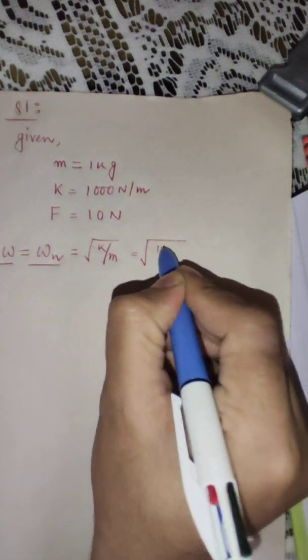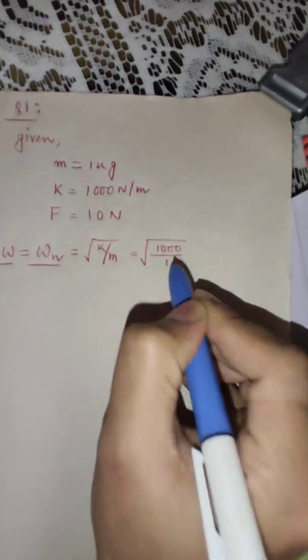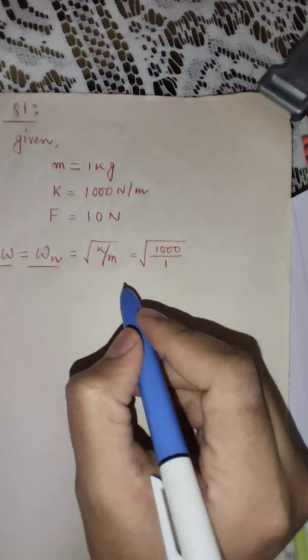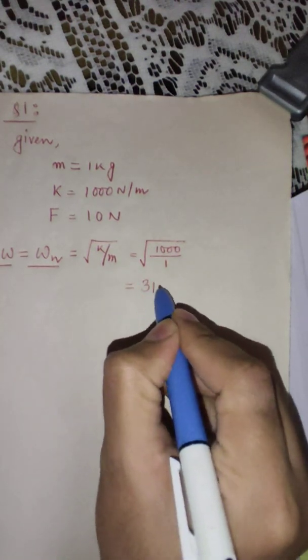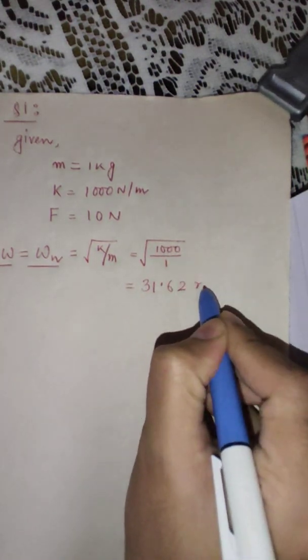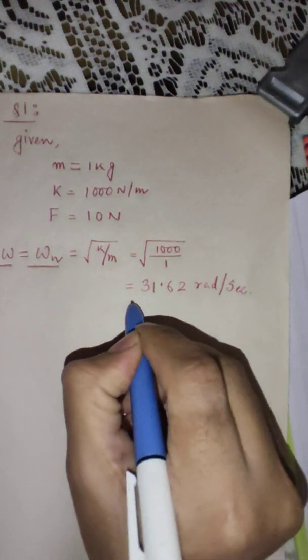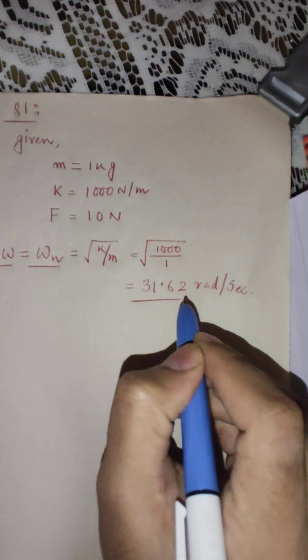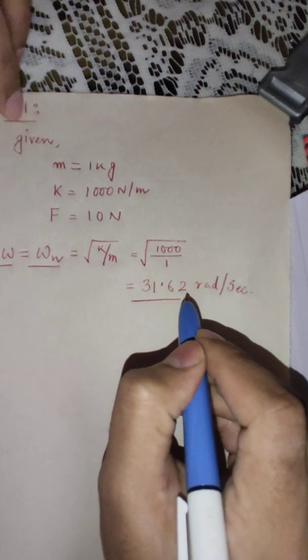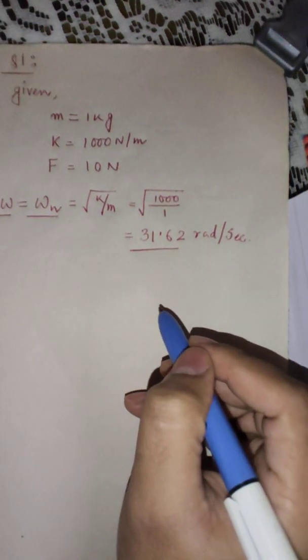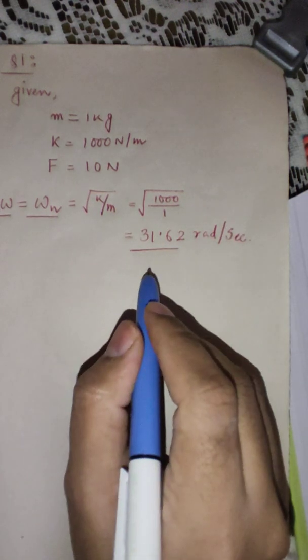Your k is given as 1000 and mass is 1. So your answer is 31.62 radian per second. I have these ready-made values. I have calculated these values and these are some solved problems from the book, so the values are readily available with me.